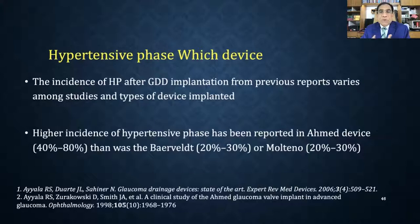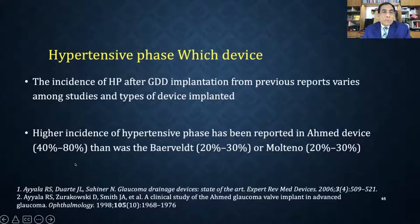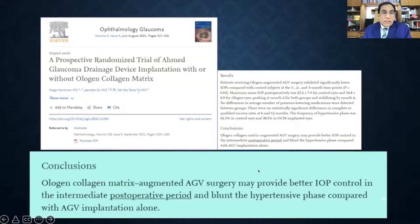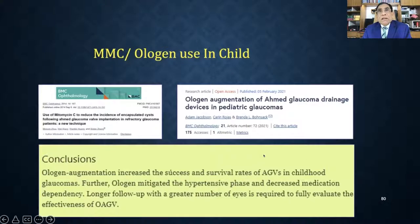Hypertensive phase is important: glaucoma drainage devices have three phases. For valved devices especially, an early hypertensive phase can occur within the first week. A second hypertensive phase typically occurs within three months as the plate develops an intense bleb. After four months, a steady or stable phase is reached, with a good, mature bleb and decreased IOP.